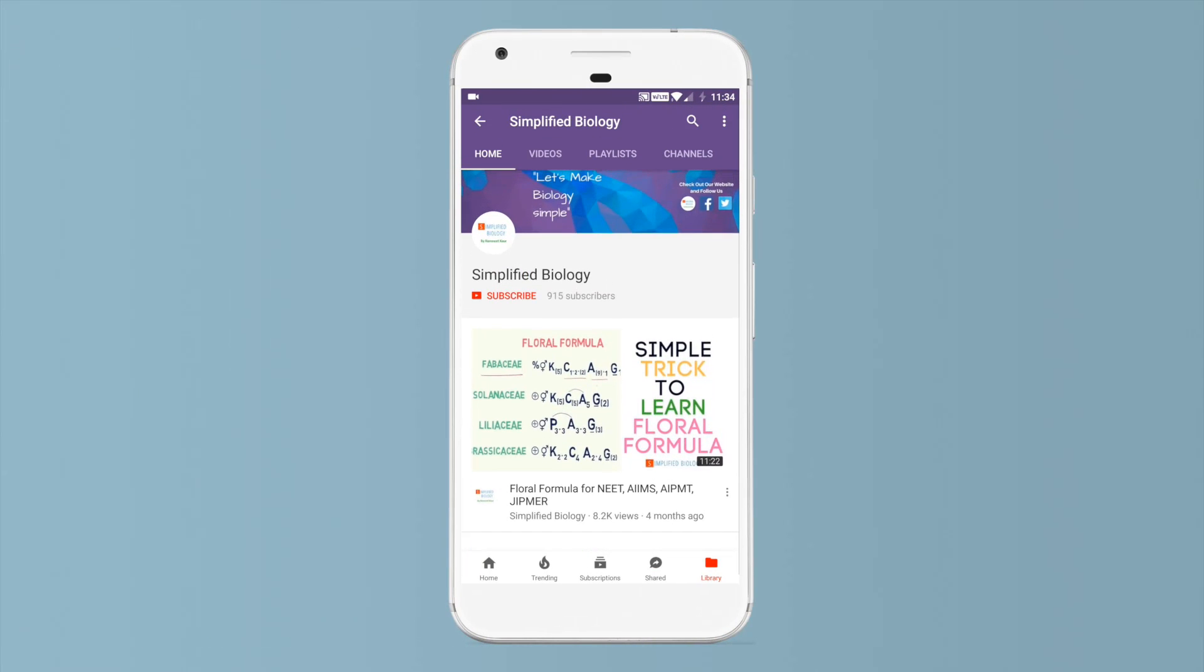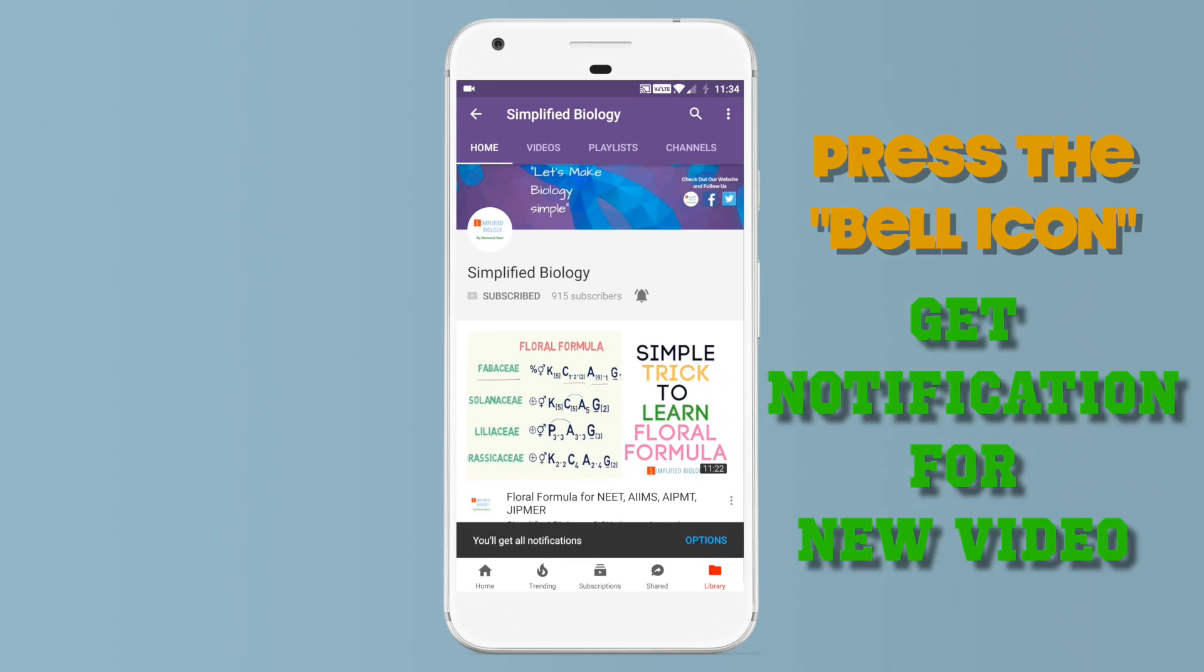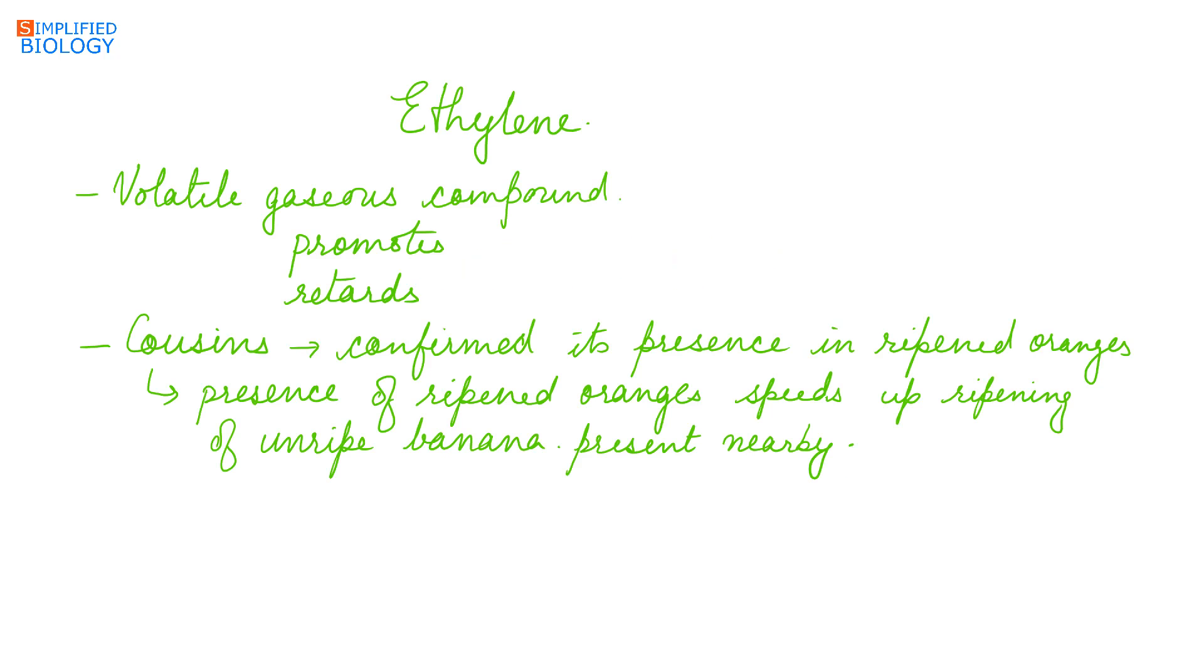Subscribe to Simplified Biology channel and press the bell icon to get notified when a new video is uploaded. Hello friends, welcome to Simplified Biology. Today's topic is ethylene, a plant growth regulator.